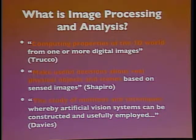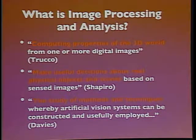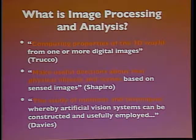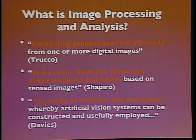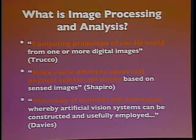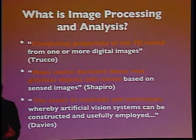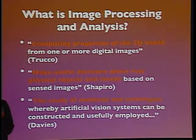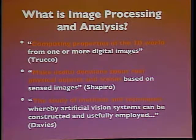Another point of view is that it's about making useful decisions about real physical objects and scenes — that's the robotics point of view on image processing. There's a whole world of people that work on robotics, things like the Roomba vacuum cleaning robot. From their point of view, everything you do in relation to your robot is a means to an end: getting the robot to interact with the real world. Image processing is the process of taking video, sonar, or radar streams attached to your robot and using them to make decisions, like should you keep driving straight or make a turn?